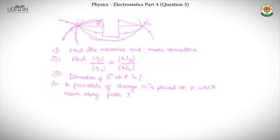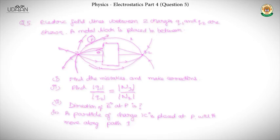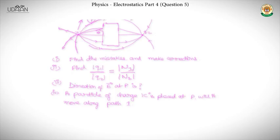For the direction of E at point P: you simply draw a tangent to the field line at P, and that tangent gives the direction of E at that point.